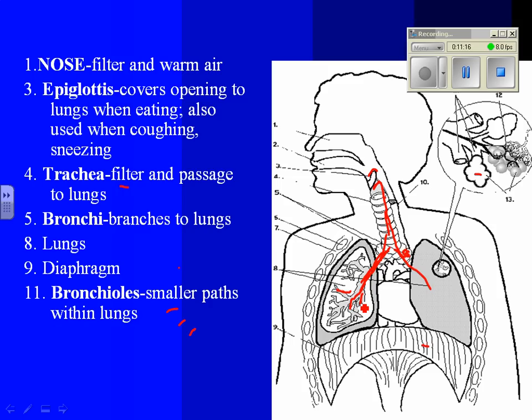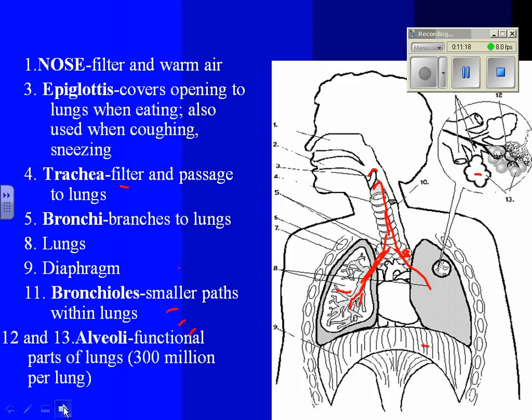And then you end at, what I put on here is 12 and 13, the alveoli. Alveoli are the functional parts of your lungs, and there are about 300 million of them per lung, and we're going to talk about those in some detail.